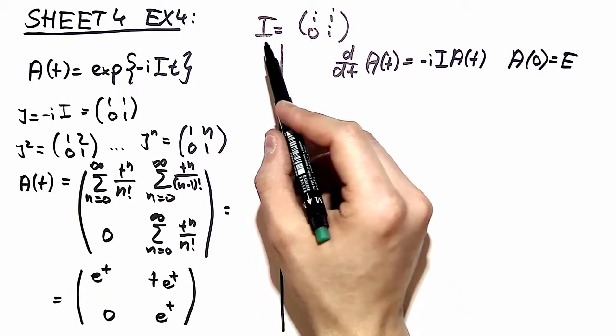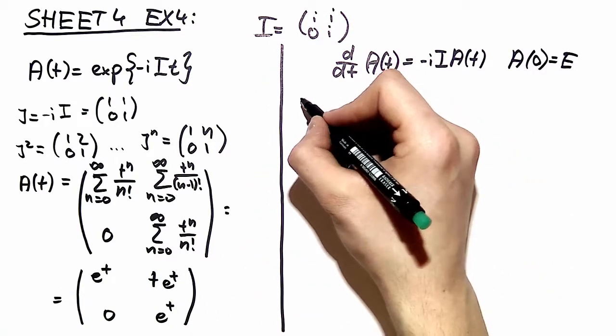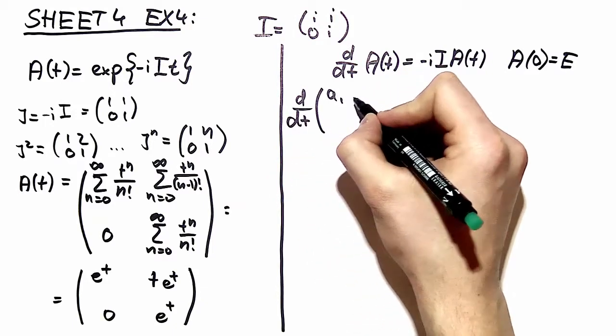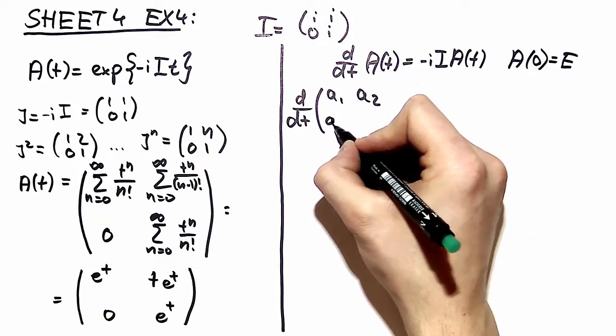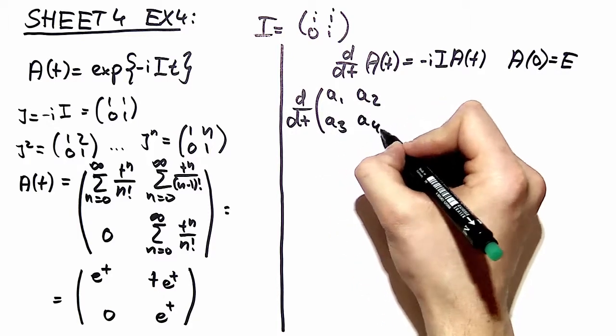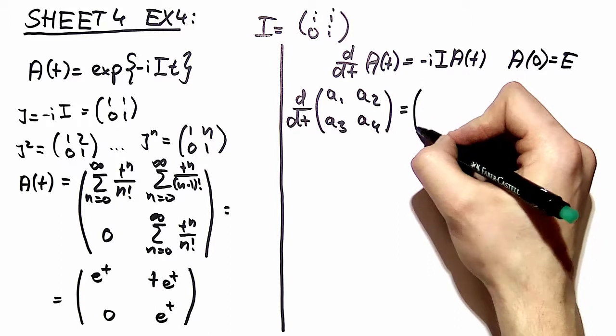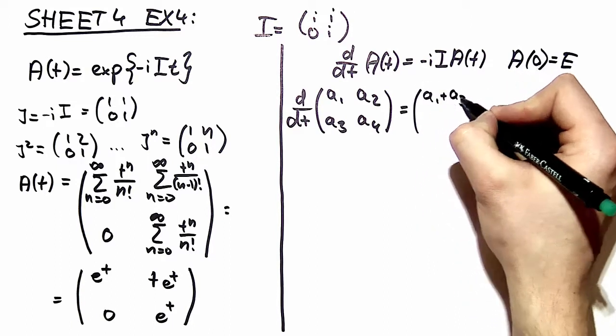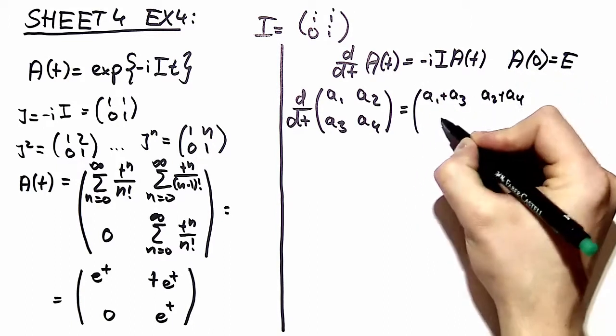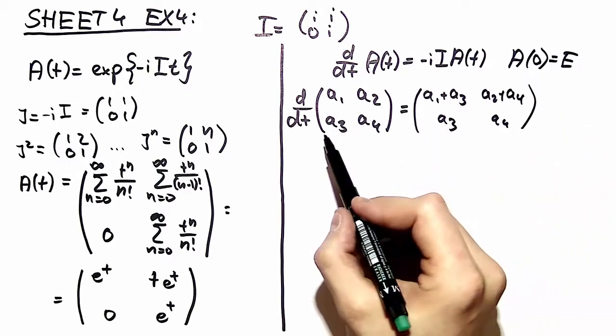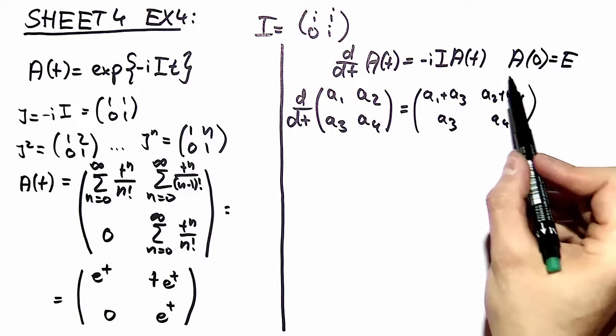So let's move on and do that same thing for that differential equation. We take an arbitrary matrix with the four different matrix elements and we calculate the right-hand side to obtain (a1 + a3, a2 + a4; a3, a4) and now we solve the differential equations occurring in this equation.